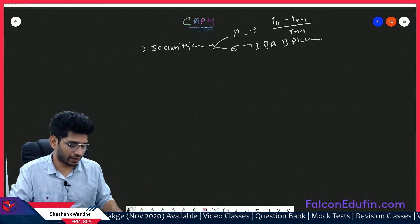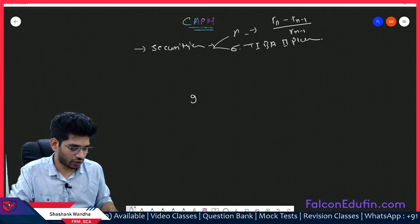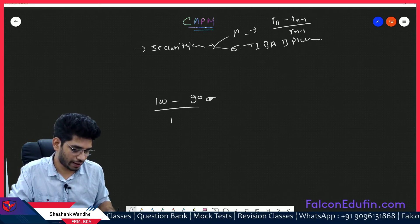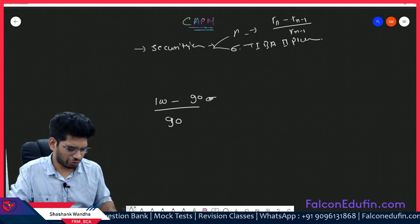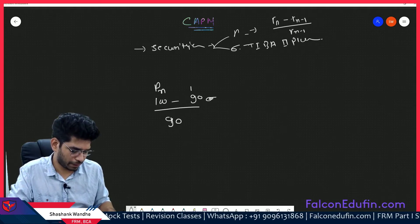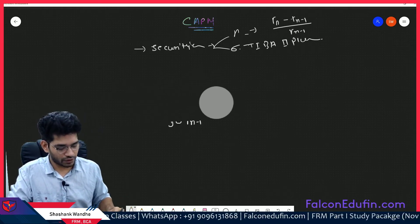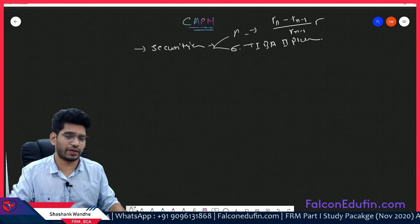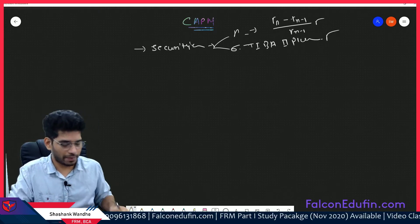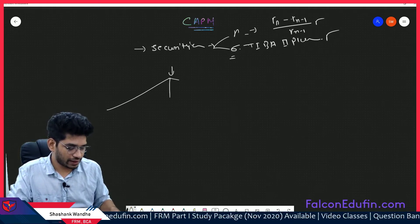Return is calculated as R_N minus R_N-1 divided by R_N-1 — that is today's price versus tomorrow's price comparison. For example, if one month ago the price of a stock was 90 and today the price is 100, your return is (100 minus 90) divided by 90. You can name it P_N minus P_N-1 divided by P_N-1. Return can be calculated very easily, and standard deviation can be calculated easily using the TIBA 2 Plus calculator.